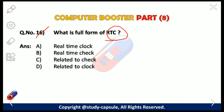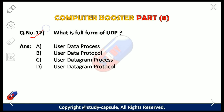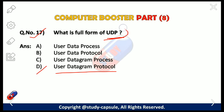Our 16th question: what is the full form of RTC? The answer is A — Real Time Clock. Our 17th question: what is the full form of UDP? The options are: A — User Data Process, B — User Data Protocol, C — User Datagram Process, D — User Datagram Protocol. The answer is D — User Datagram Protocol. UDP is an alternative communications protocol to TCP, used primarily for establishing low-latency and loss-tolerating connections between applications on the internet. Both protocols send short packets of data called datagrams.